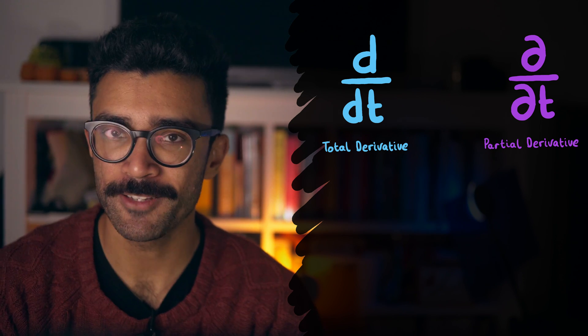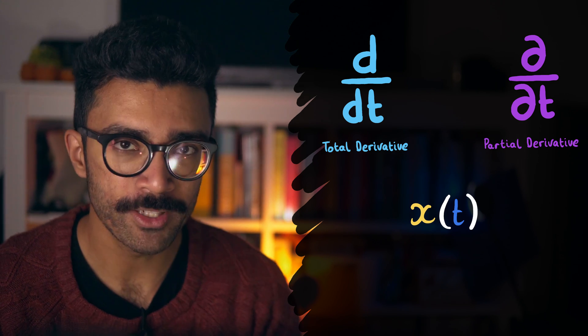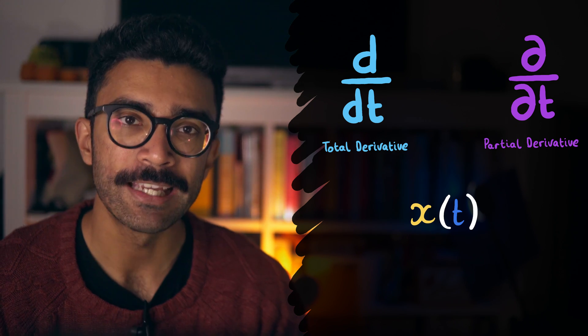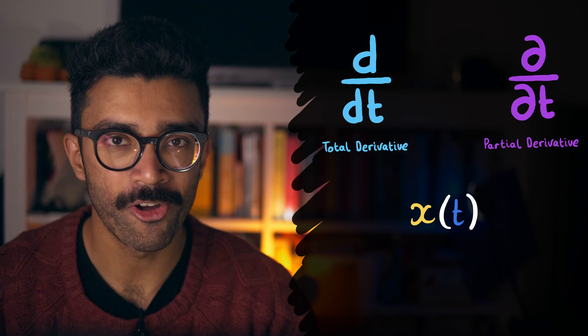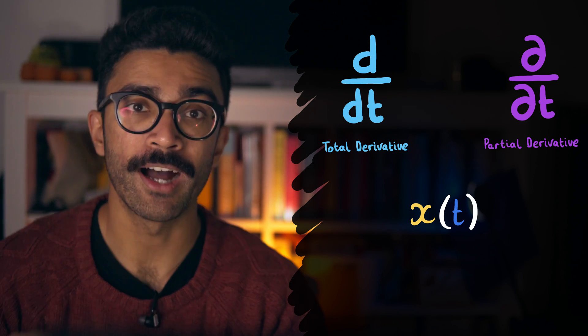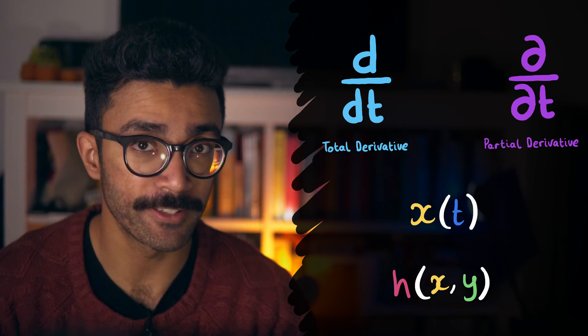When we studied the position of our car, we saw that it only depended on one quantity – time. In other words, we could plug in a single value of t and find out what the position of the car was at that value of t. However, let's now consider something else entirely. Let's now think about a surface along which we can move, and the height of this surface at different points.